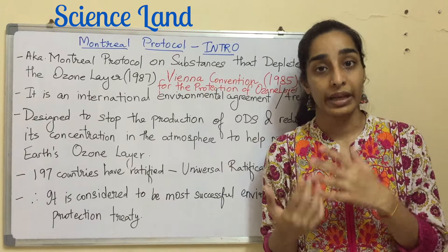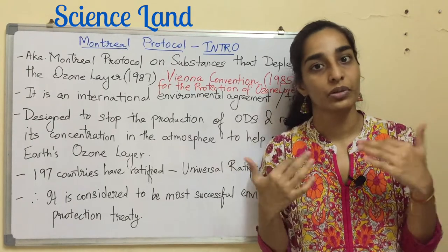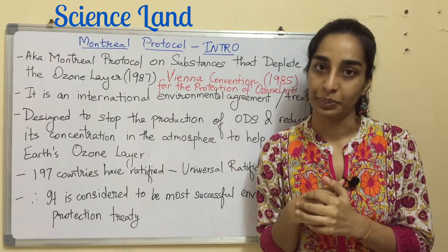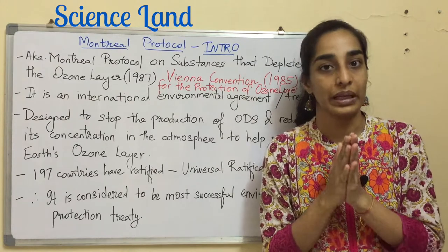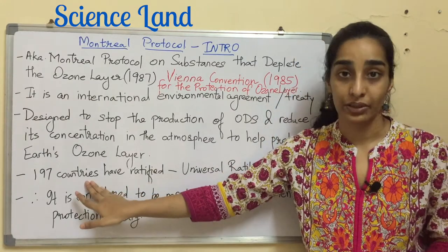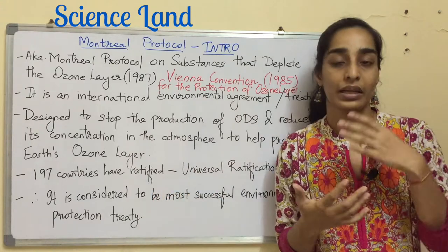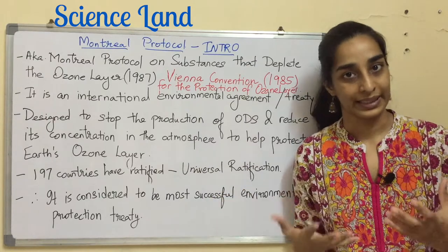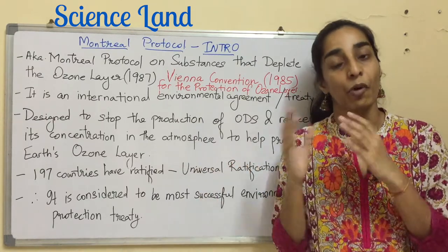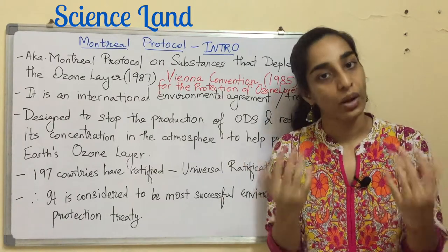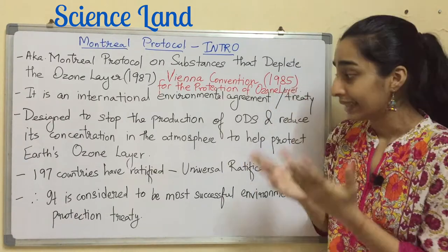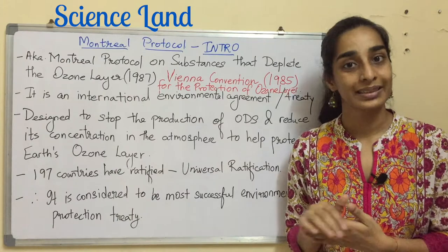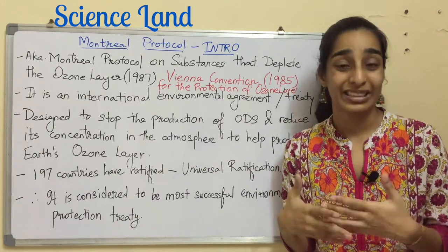ODS are certain chemicals which break the ozone molecule, hence the name ODS — ozone depleting substances. If the ozone is broken down, harmful UV rays can easily penetrate and have adverse effects on human beings. Because the ozone layer is very important, 197 countries have signed this protocol, giving Montreal Protocol universal ratification status — meaning it is accepted by all countries around the globe. Therefore it is considered the most successful environment protection treaty.